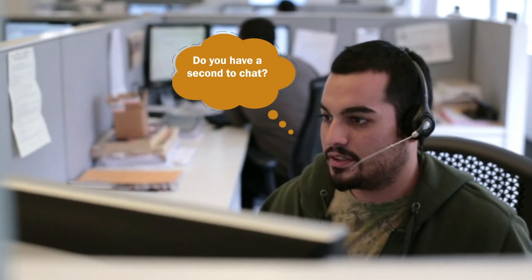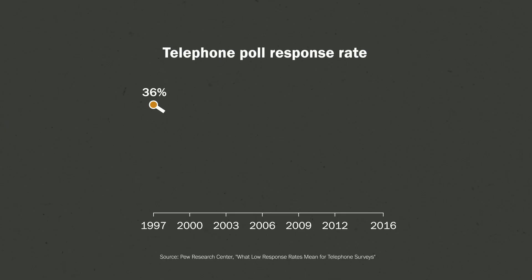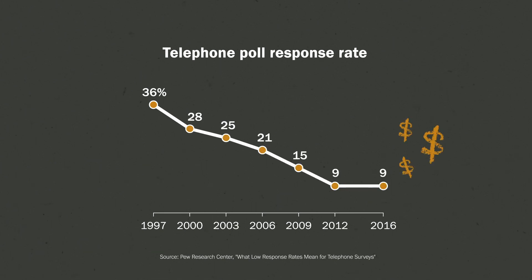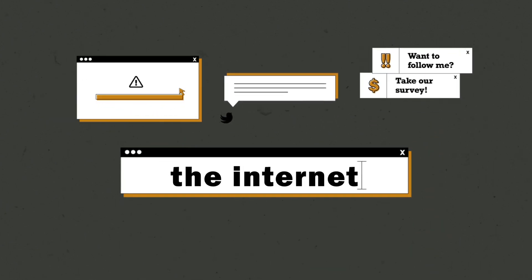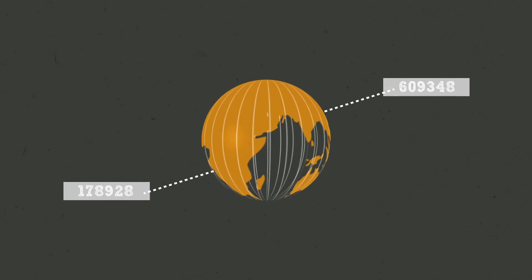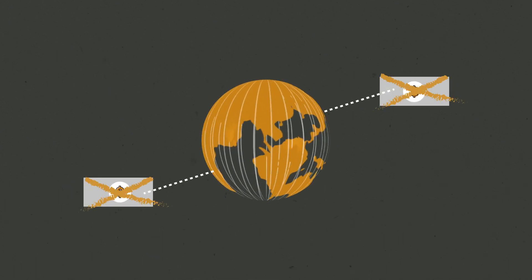There are two main reasons for this shift. First, it's become harder for pollsters to get the people they randomly select to actually respond to the surveys, which has made traditional polling more difficult and expensive. The second thing that's happened is the internet. All of a sudden, you can reach thousands of people using this completely new channel. You don't have to pay interviewers, and people can respond when it's convenient for them.